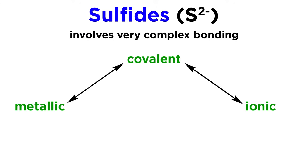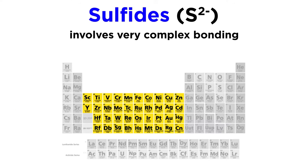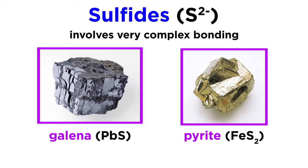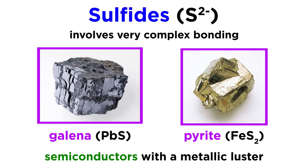Our final class of minerals that contain a single anion are the sulfides. Unlike the oxides and halides, the bonding in sulfides is very complex, and can range from ionic covalent to metallic covalent depending on what it is bonding with. Most sulfide minerals are composed of sulfur bonded to a transition metal and often display many of the properties of metals. Incidentally, both galena, lead sulfide, and pyrite, iron disulfide, are semiconductors with a metallic luster.